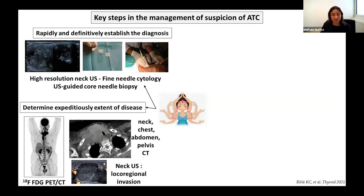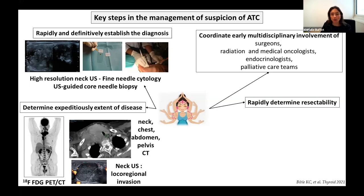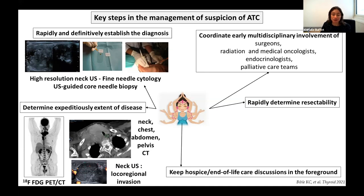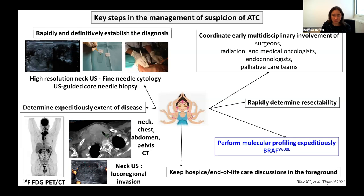You will rapidly have to determine the resectability of the primary tumor and coordinate early multidisciplinary involvement of surgeons, radiation and medical oncologists, endocrinologists, and palliative care teams. Given the historically poor prognosis of ATC, hospice and end-of-life care discussions must be kept in the program. Molecular testing now plays a key role in the management of ATC, so you will have to perform molecular profiling of the tumor expeditiously, and especially BRAF V600E testing.